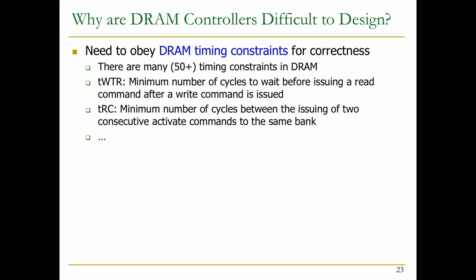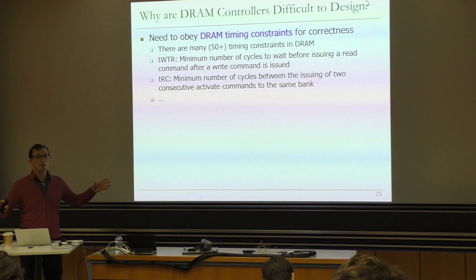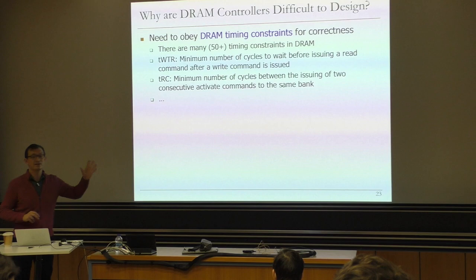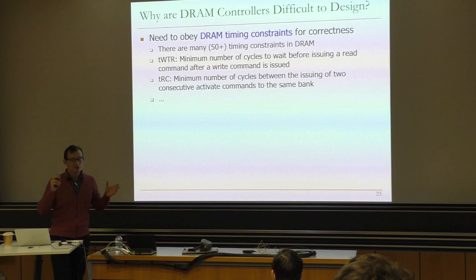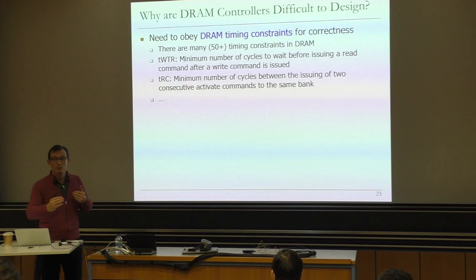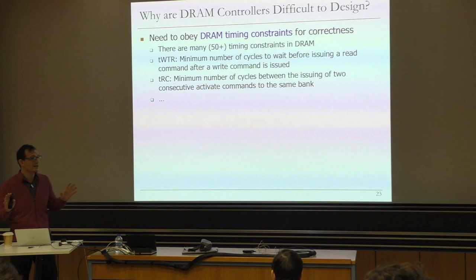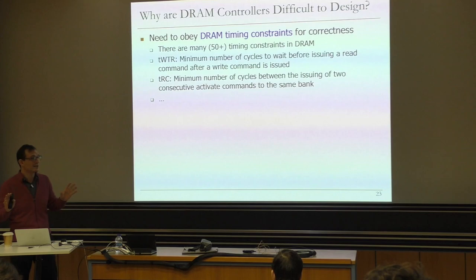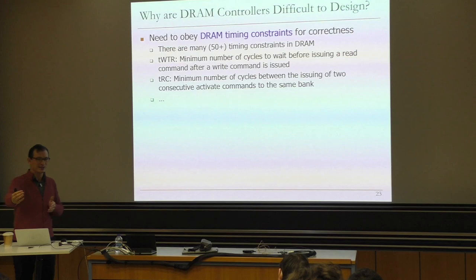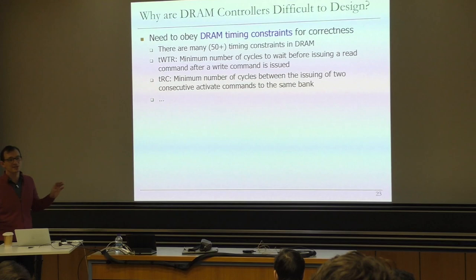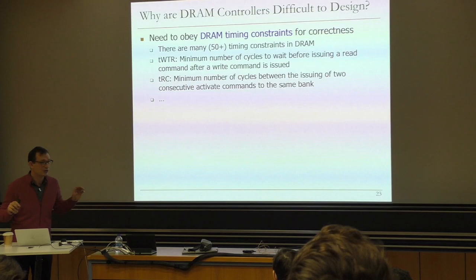This constraint exists because whenever you're driving the memory bus, you drive it only one way — you need to turn around the bus if you want to drive it the other way. When writing, you write data into the DRAM chip; when reading, you read data out. That's called the bus turnaround time, and this timing constraint takes it into account. As a result, existing memory controllers try to batch write requests — they accumulate writes in a write buffer and wait before servicing them. After a high-water mark, they switch to write mode, during which you cannot service reads from that channel.